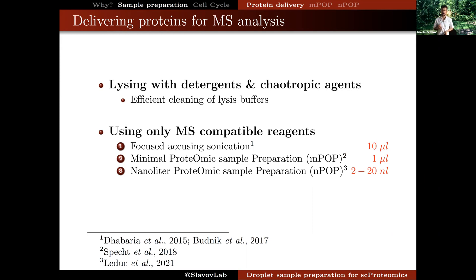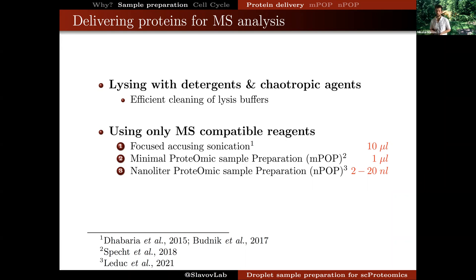Because of that, the strategy in my group has always been to use mass spec compatible reagents. The first method we used was based on lysing single cells by focused acoustic sonication in pure water. We were able to do that in about 10 microliters per single cell, but this method was fairly laborious and low throughput, so it was clear that we had to develop methods that are more efficient, easier to automate, and higher throughput.